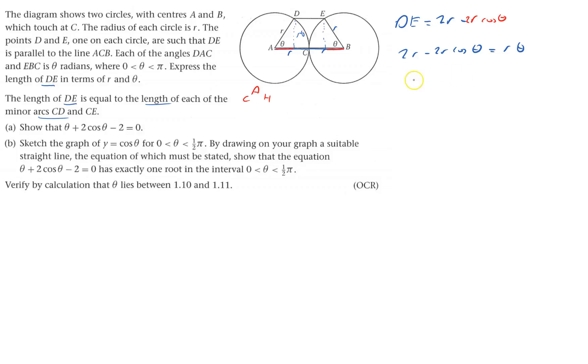I'm going to divide through by r, so r disappears. I'll put everything onto the right-hand side, so that'll be cos theta plus theta minus 2, and that'll be 0 here. Or I could write it the other way: theta plus cos theta minus 2 equals 0. Done that bit.